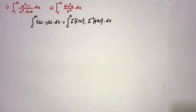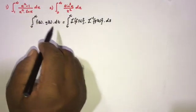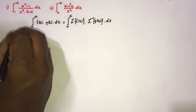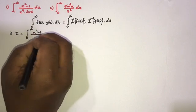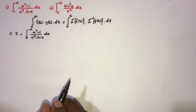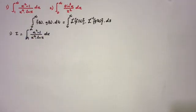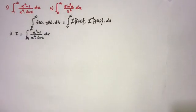This is the general formula for the mass identity in Laplace transform. Now we are going to solve two integrals using this identity. For the first question, I take I equal to the integral from 1 to infinity of (x² − 1) over (x⁴ · ln x) dx. To use the mass identity we need the lower limit to be 0, so I will apply a substitution.